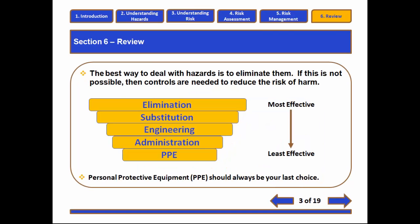Once you've identified a hazard, what are you going to do? Ideally, you want to eliminate it. However, that's not always possible. So if you can't eliminate a hazard, you use a series of mitigation techniques, including substitution, engineering controls, administrative controls, and personal protective equipment.